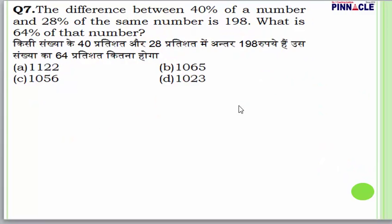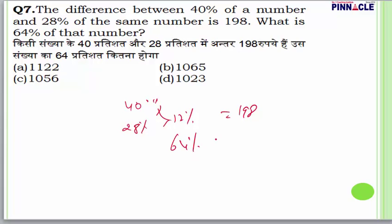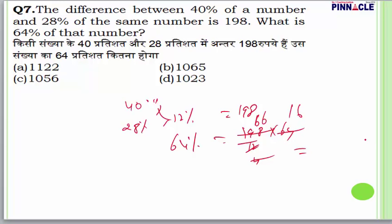Question number 7: The difference between 40% and 28% of a number is 198. The difference is 12%, so 12% = 198. What is 64% of that number? 64% = (198/12) × 64 = 1056. Answer is C.